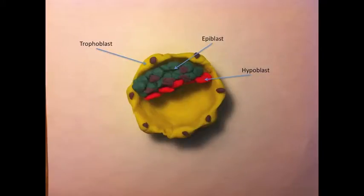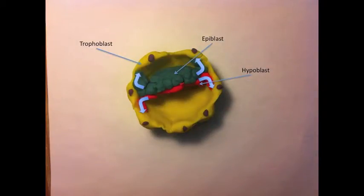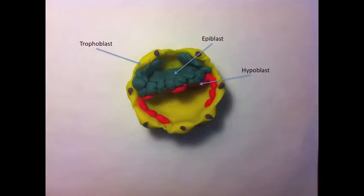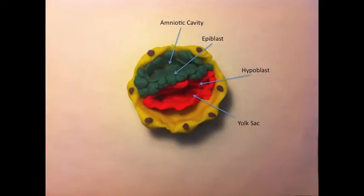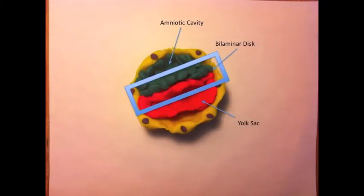The epiblast will become the embryo proper while the hypoblast forms the yolk sac and contributes to extra embryonic structures. The hypoblast and epiblast spread along the interior of the trophoblast to form the yolk sac and amniotic sac respectively. The blastocyst is now bilaminar and gastrulation can begin.